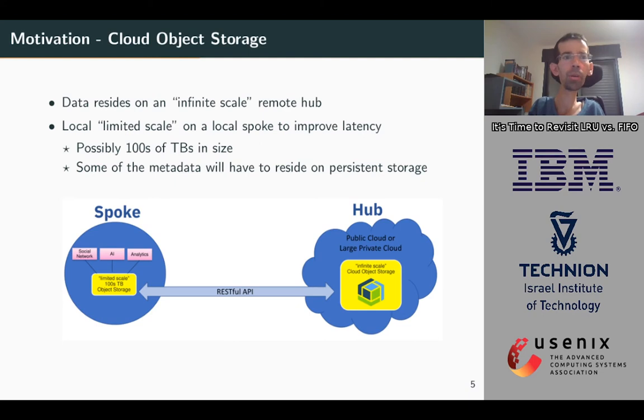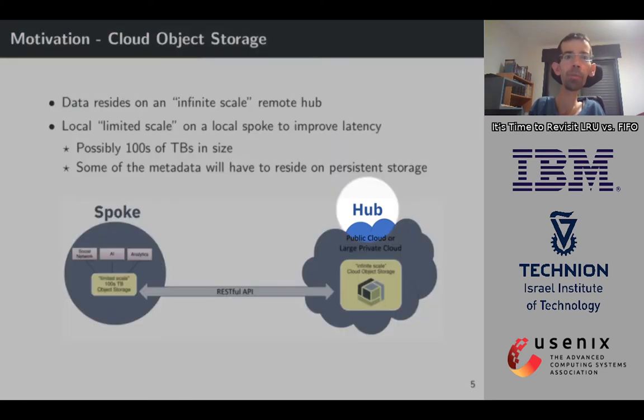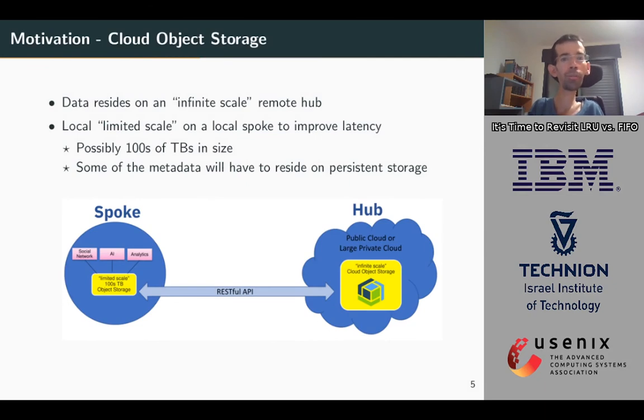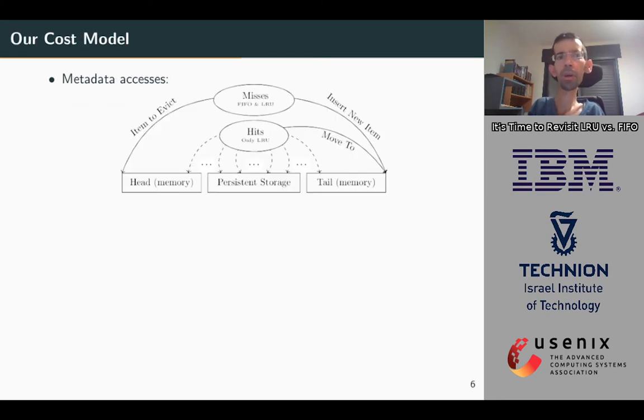The example that motivates us to explore the subject is a system of hybrid cloud object storage. In this example, we have an unlimited amount of data on a remote hub and a limited local spoke that serves as a cache to improve the latency of the users. The spoke is limited, but even so, we expect it to serve hundreds of terabytes. Because of that, a big part of the metadata, which is the list of items in the cache in our case, is expected to be on persistent storage. When the metadata is in memory, we consider the accesses to it negligible. But what happens when the metadata is too big for memory? We need to place part of it on persistent storage, and then those accesses have a latency cost.